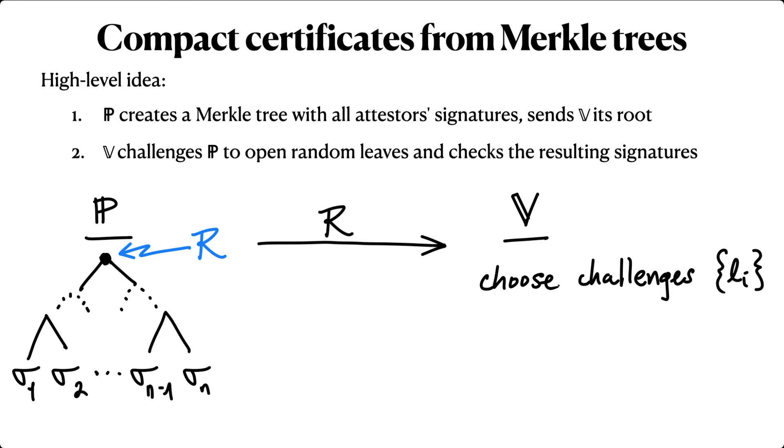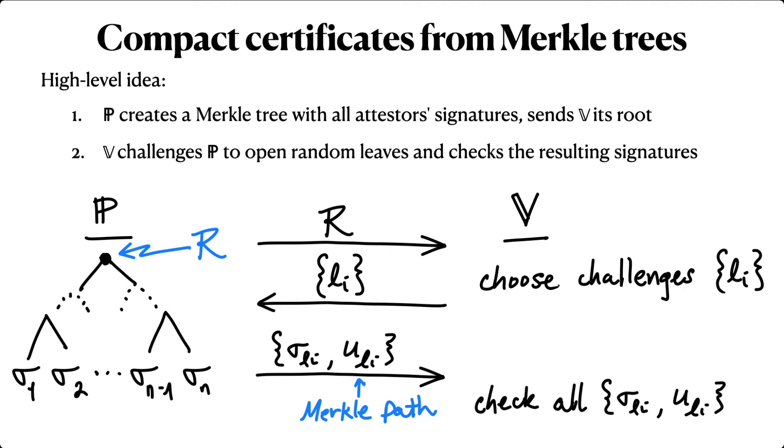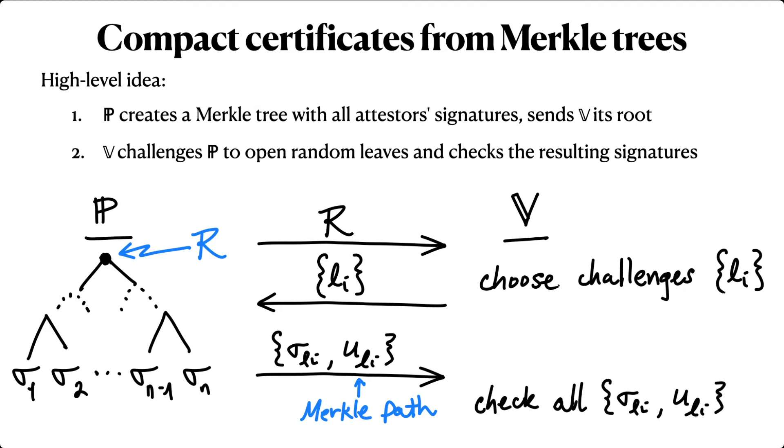The prover responds with the signatures in the leaves corresponding to each challenge, plus the Merkle path authenticating that leaf against the root R. And finally, the verifier checks all of the signatures and all of the authenticating paths.